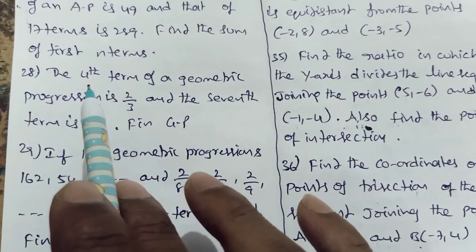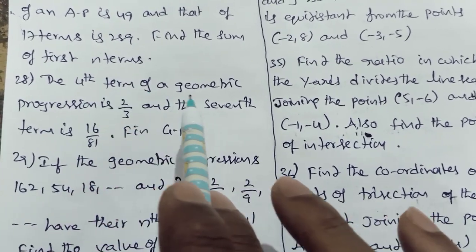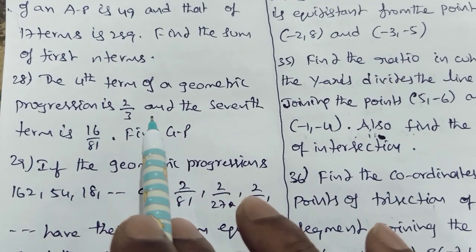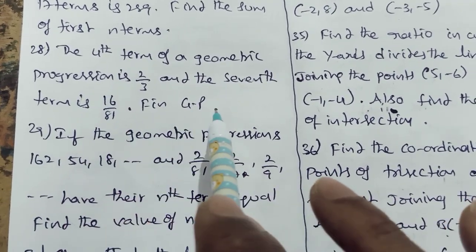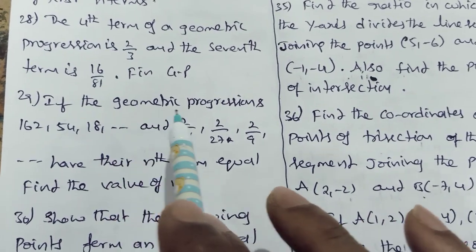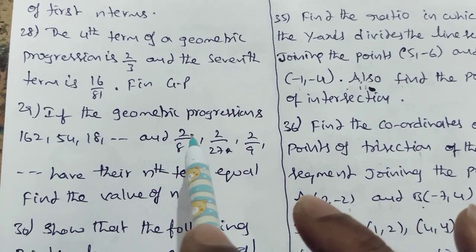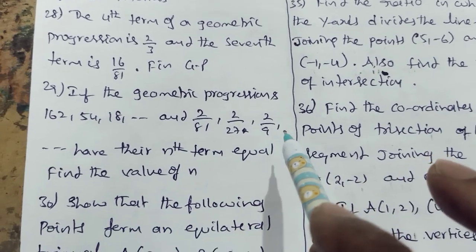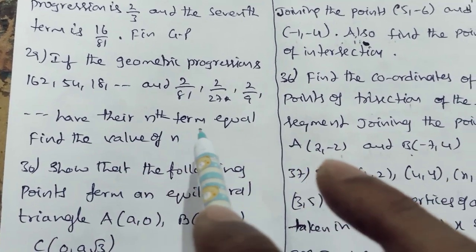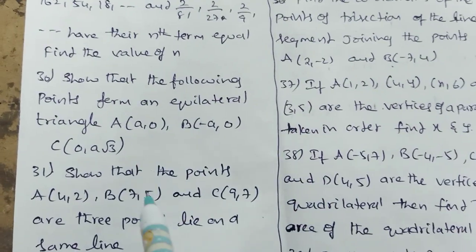The fourth term of a geometric progression is 2 by 3 and the seventh term is 16 by 81, find the GP. If the geometric progressions 162, 54, 18 and so on, and 2 by 81, 2 by 27, 2 by 9 and so on have their nth term equal, find the value of n.